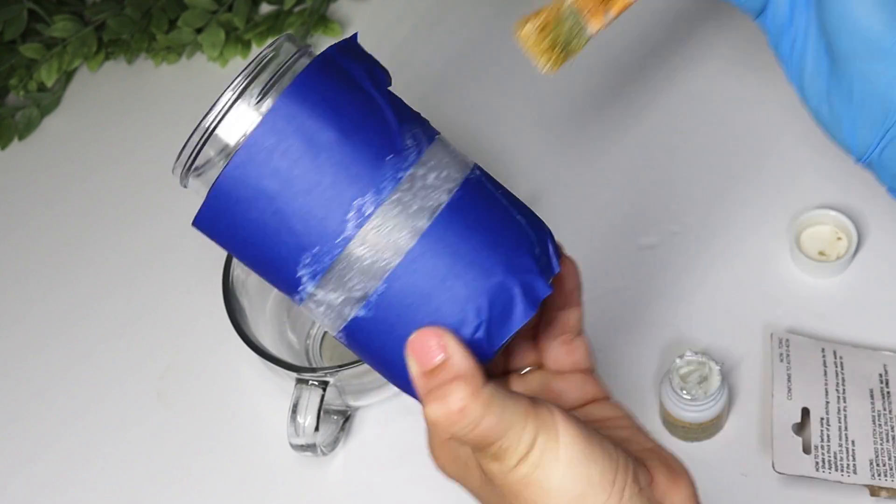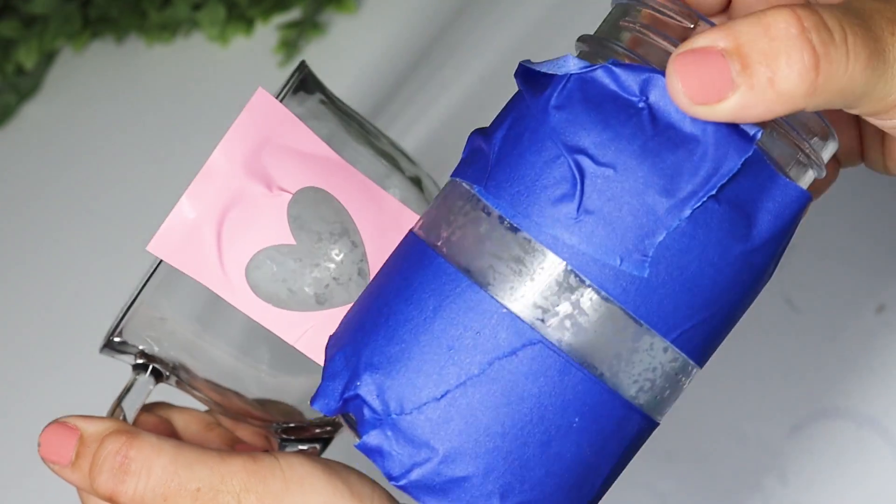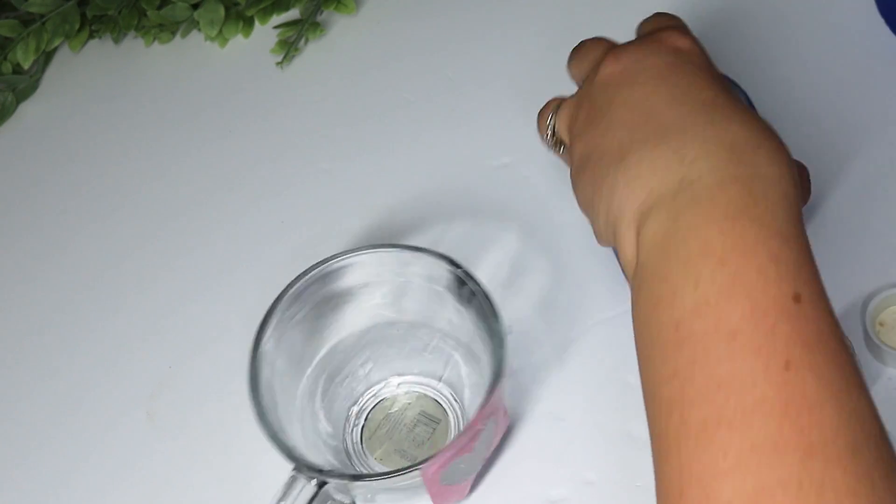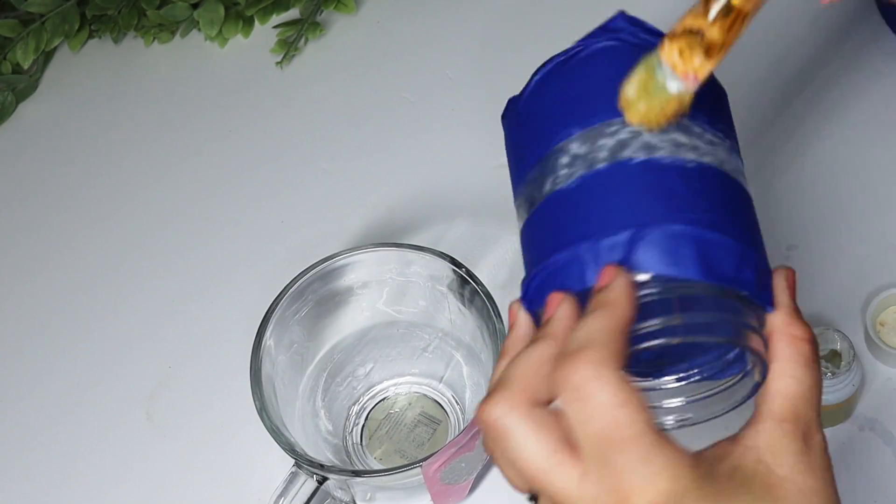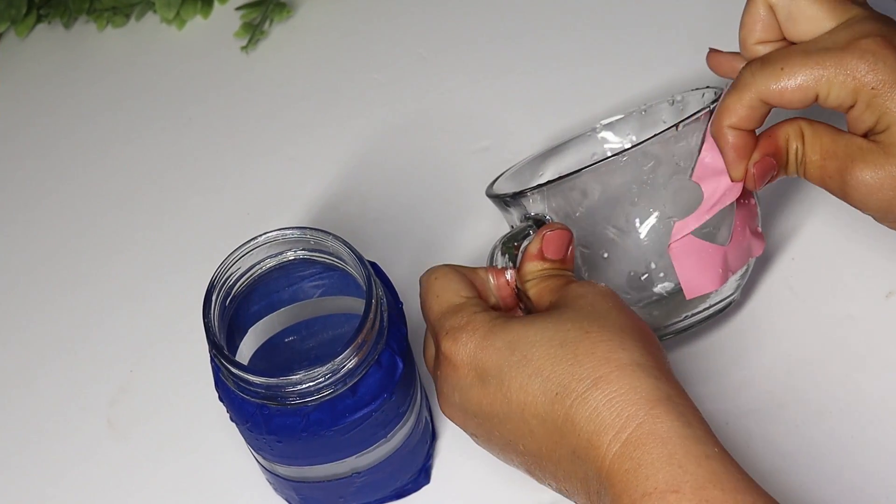I washed this off and you could kind of see that it wasn't a solid layer of the etch. So I did go back in with a second coat and this really helped it. So definitely recommend doing a few coats of this and just keep applying it until you get the look that you want. I went and rinsed it off.